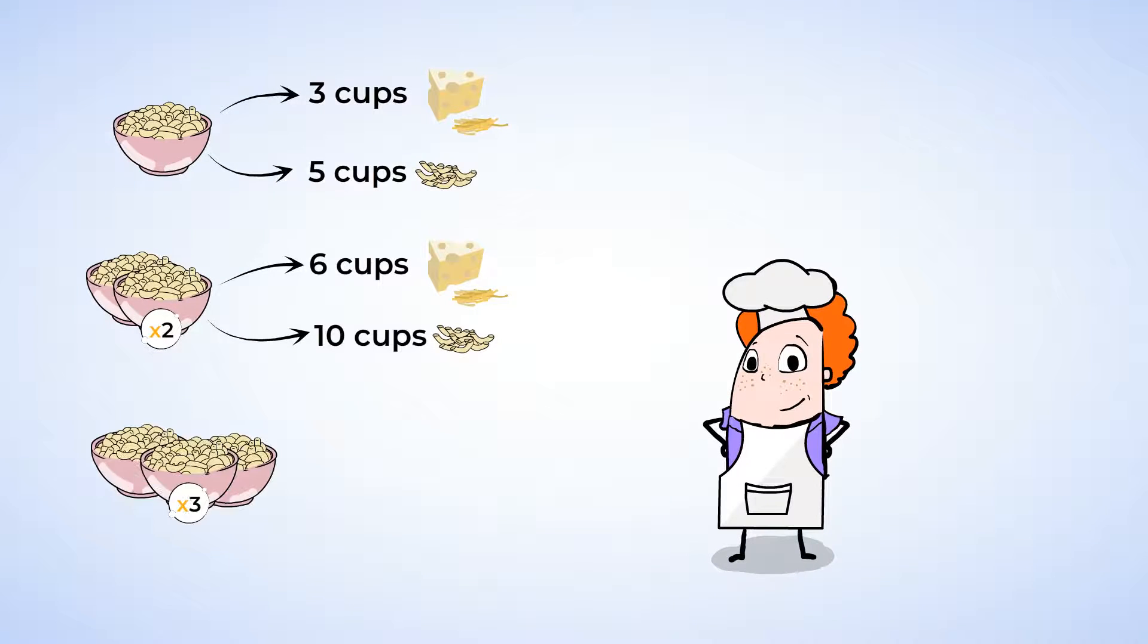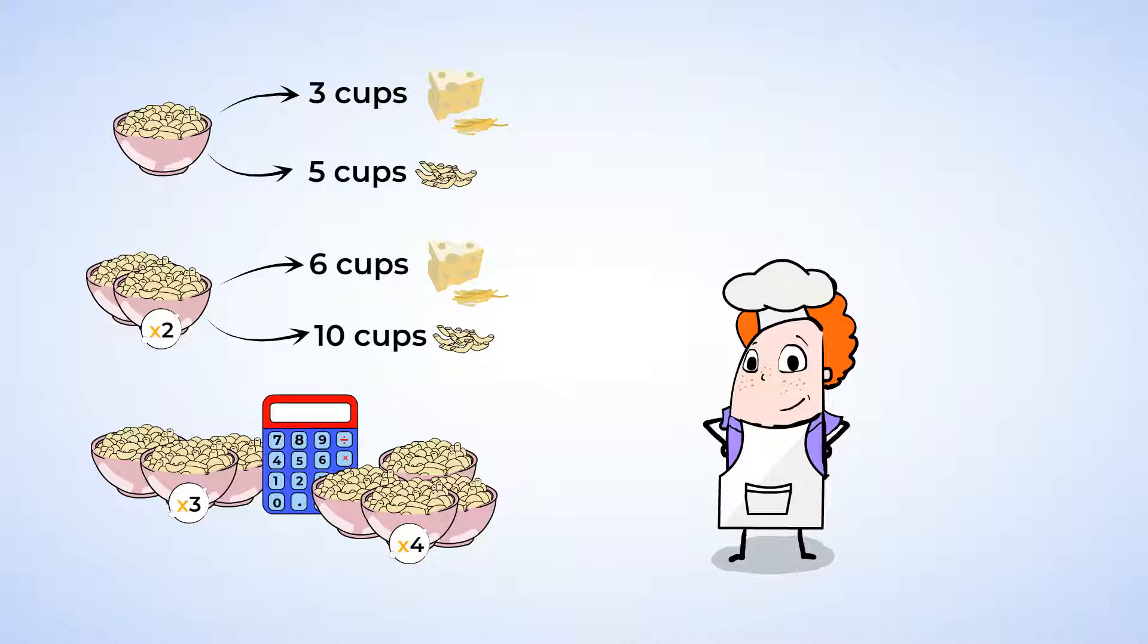If you had to triple or even quadruple the original recipe, you could do the math to figure out how many ingredients you needed. But you would rest assured knowing that the final mac and cheese would taste just as good as the original recipe. That's because the relationship between the cups of cheese and cups of macaroni are in proportion to each other. So whether it's 3 cups of cheese and 5 cups of macaroni, or 6 cups of cheese and 10 cups of macaroni, the ratio of cheese to macaroni is always the same.